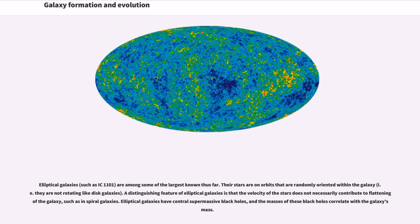Elliptical galaxies, such as IC 1101, are among some of the largest known thus far. Their stars are on orbits that are randomly oriented within the galaxy, i.e., they are not rotating like disk galaxies. A distinguishing feature of elliptical galaxies is that the velocity of the stars does not necessarily contribute to flattening of the galaxy, such as in spiral galaxies. Elliptical galaxies have central supermassive black holes, and the masses of these black holes correlate with the galaxy's mass.